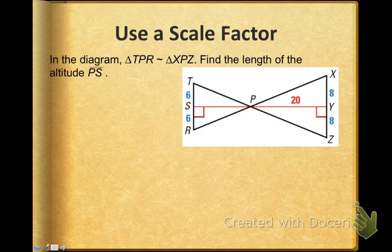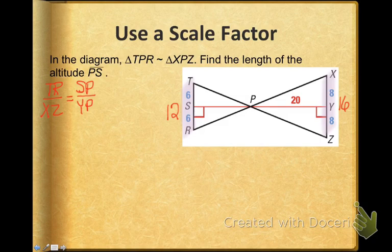Now if you know that these two triangles are similar, then you know that their altitudes must also be similar. So the first thing I'm going to do is add up the two segments in TR and get that the length of TR is 12, and do the same thing with XZ and find the length of XZ is 16. Now I know, because these figures are similar, that TR is to XZ in the same proportion that the altitudes SP is to YP.